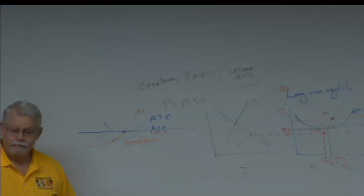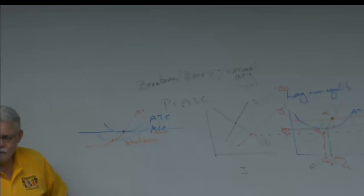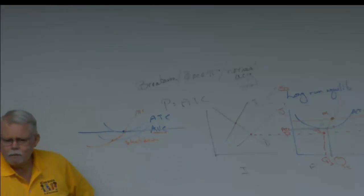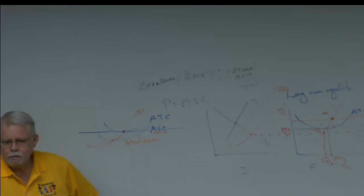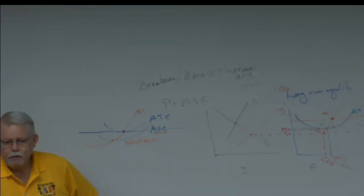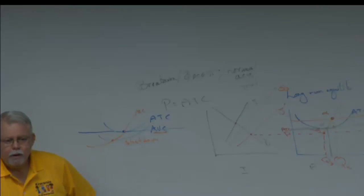Student: Are we going to see a lot of Exam 2 material on this test? Like cost and utilities? Instructor: No. You might have a reference to the diseconomies of scale range of average cost. When we get into negative-slope demand curves and marginal revenue curves, you'll see the relationship between the MR curve and elasticity, so you'll need the concepts of elastic and inelastic. But as far as specific questions from Exam 2, no.